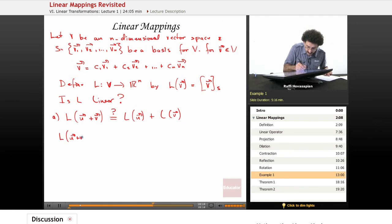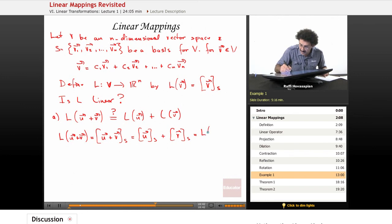L of U plus V is equal to - we use our definition - that's equal to U plus V, the coordinate of that. Well, we already know that the coordinates themselves are linear. So this is equal to the coordinate of U with respect to S plus the coordinate of V with respect to S, but that's just L of U plus L of V. So I've shown that this equals that. So part A is taken care of.